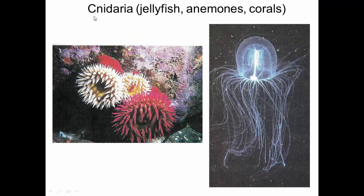Cnidarians are jellyfish, anemones, and corals. There are basically two types: ones where the bulb part implants in the substrate and the limbs hang out doing filter feeding, or free-living ones like jellyfish. The stinging cells — nematocysts — are in the tentacles. As you may know from Finding Nemo, you can bounce on the top of a jellyfish and that's fine; it's the tentacles you have to watch out for.